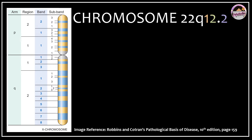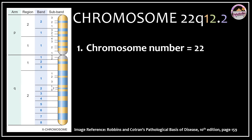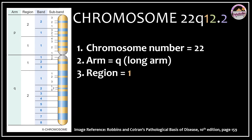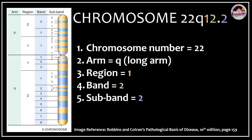Let's apply this to a location: 22q12.2. What does this mean? This means we're talking about the 22nd chromosome, long arm of this chromosome. Whatever we are discussing is in the first region of the long arm, the second band of the first region, and after the decimal point, sub-band 2 of the second band. This gives you exactly the location of the gene in question.